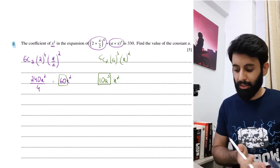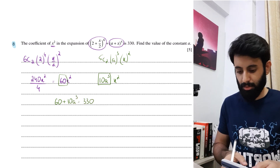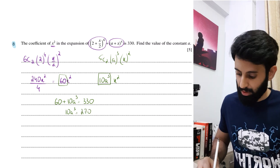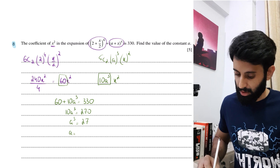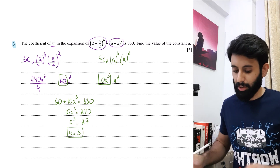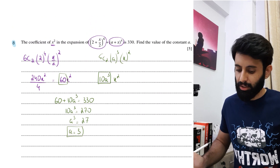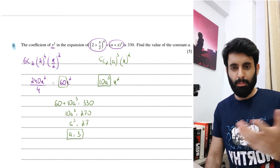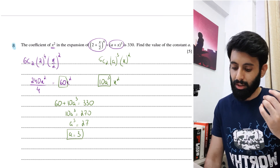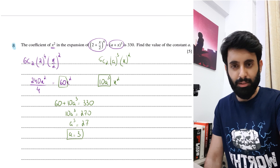According to the question the sum of the coefficients of x² equals 330, so 60 + 10a³ = 330. That gives 10a³ = 270, so a³ = 27, meaning a = 3. This is from May/June 2018 Paper 1 Variant 2. I strongly recommend downloading the file and practicing. If this content is helping, hit subscribe, like the video, and share it. See you in the next one — take care, bye!